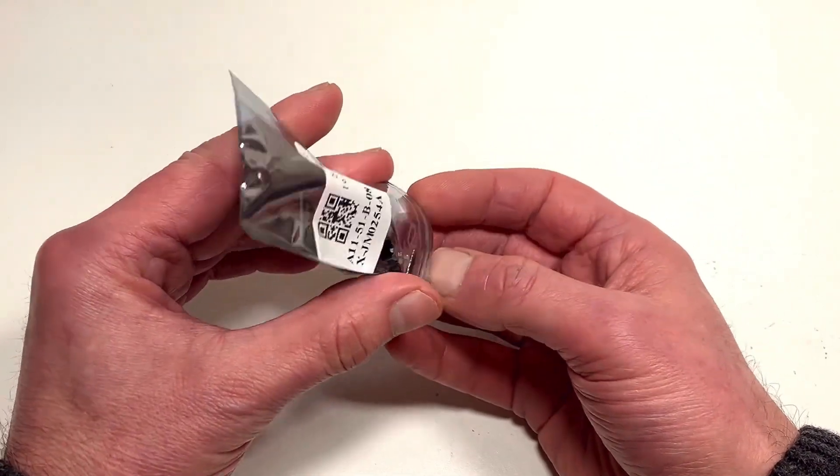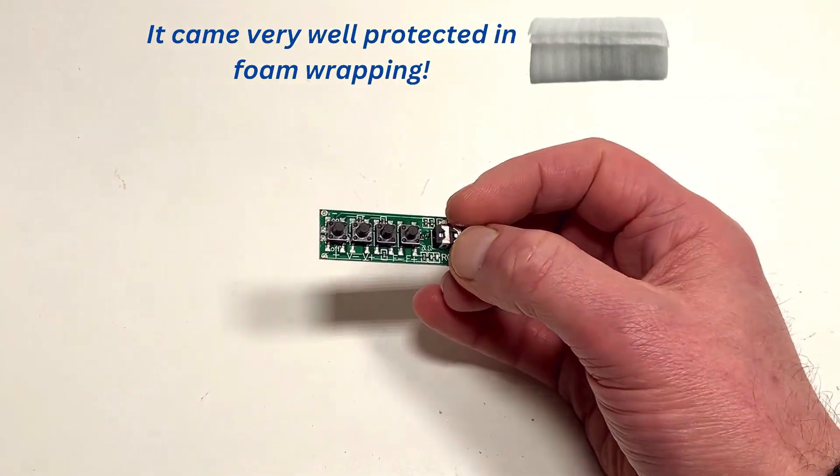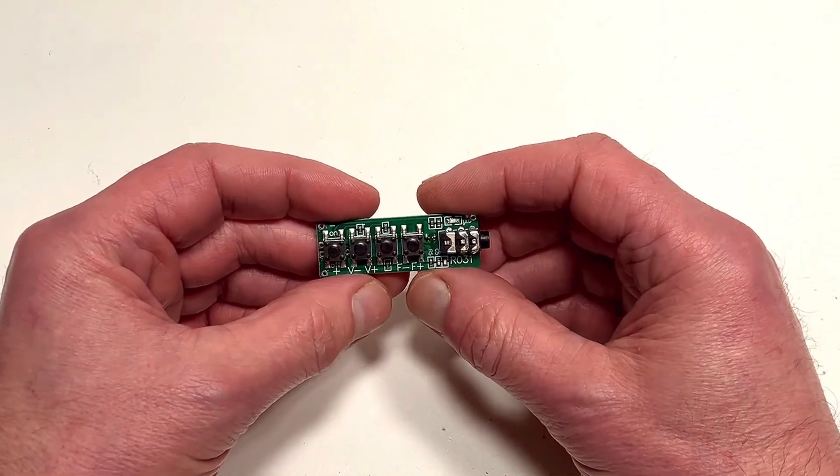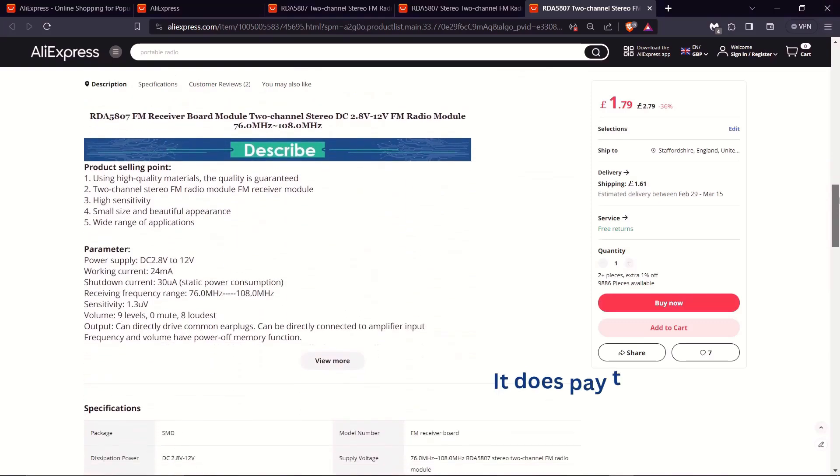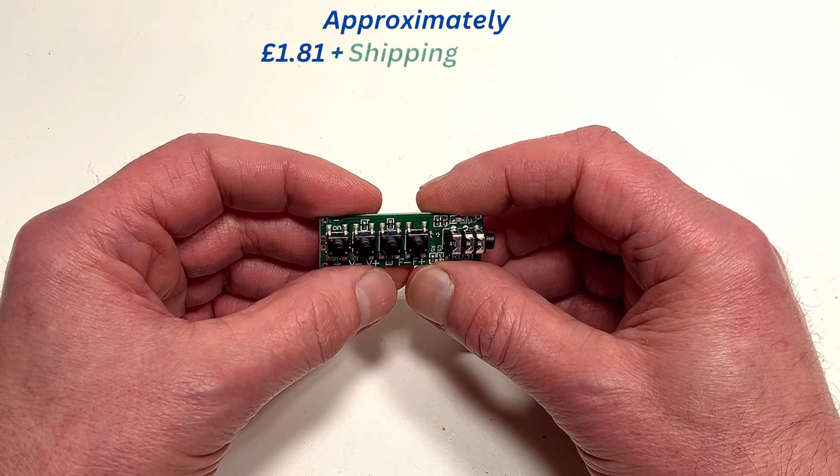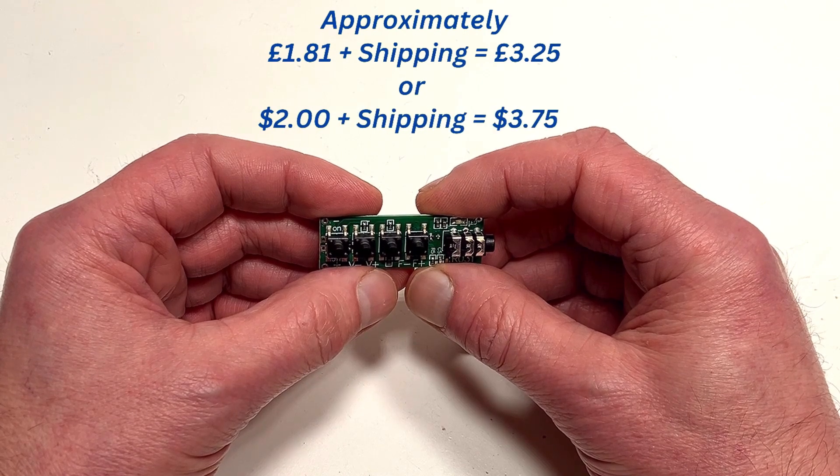Just pop it out of its little bag. Now this was bought from AliExpress and at the time of recording it cost around £1.81 UK or around $2.00. Now you do need to add shipping too. That's all around £3.25 or $3.75.